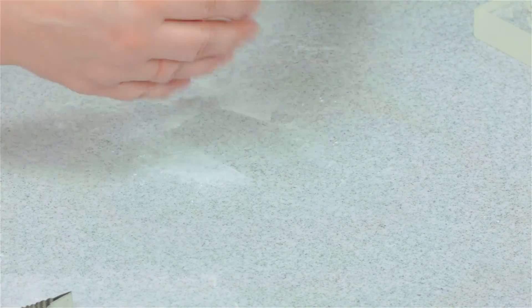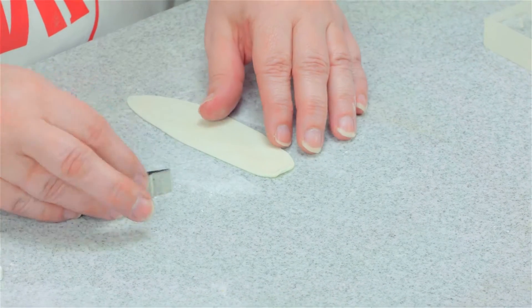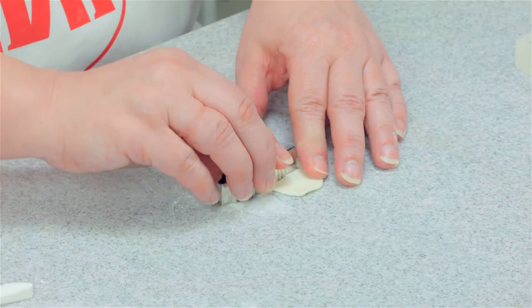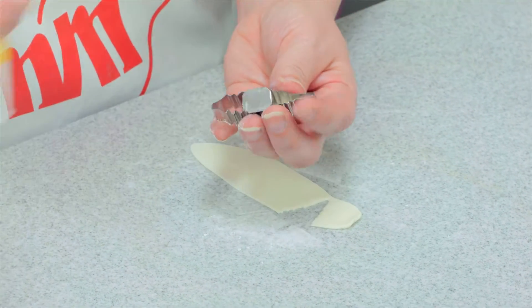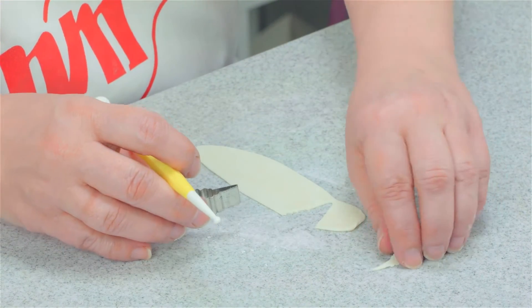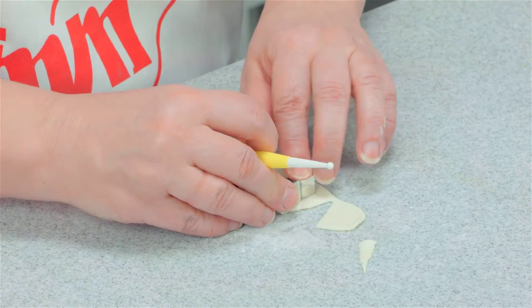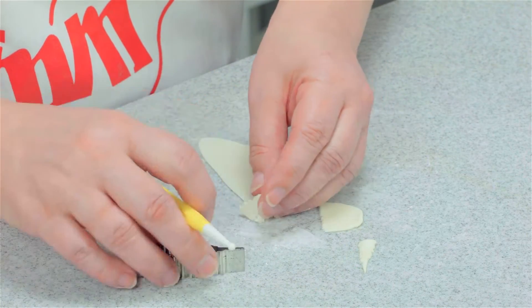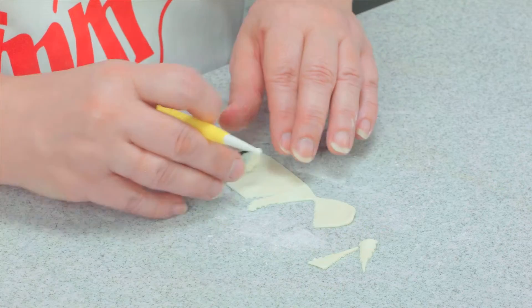I don't want it to be too thin because I want to be able to stick a wire into it. I'm using the fern cutter and to begin with I'm not cutting out the whole length of it because I need to graduate the sizes of these.